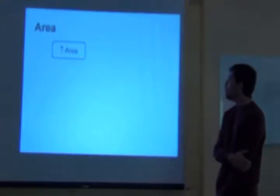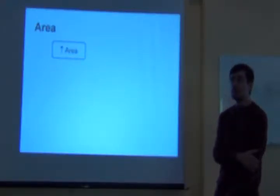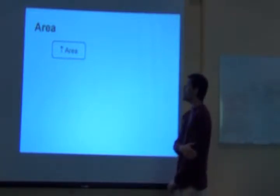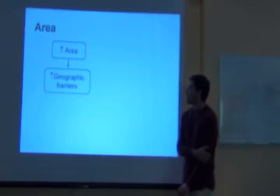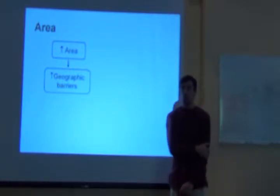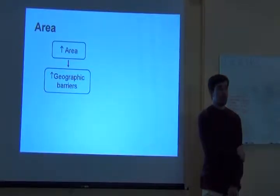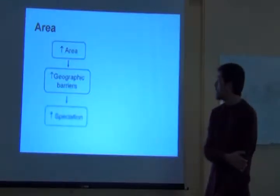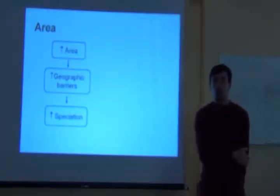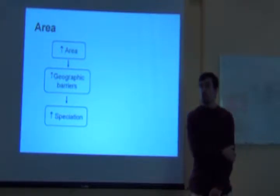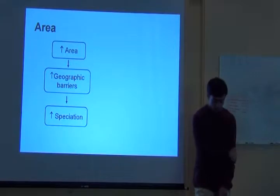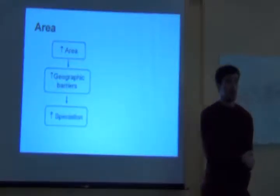How do we think that area affects species richness? We think that the larger the area is, the more likely you will find geographic barriers inside this large area. And the more geographic barriers you have, the more speciation you tend to expect given enough time.